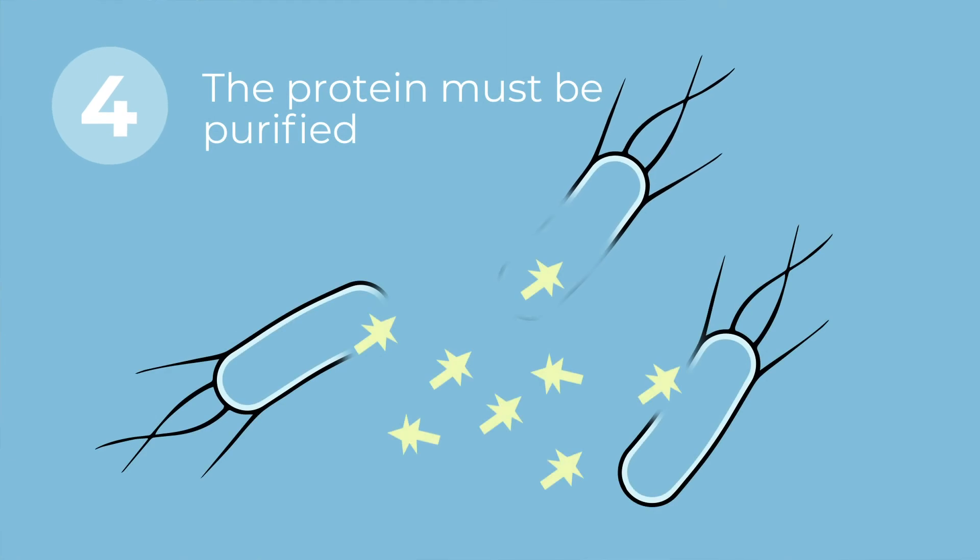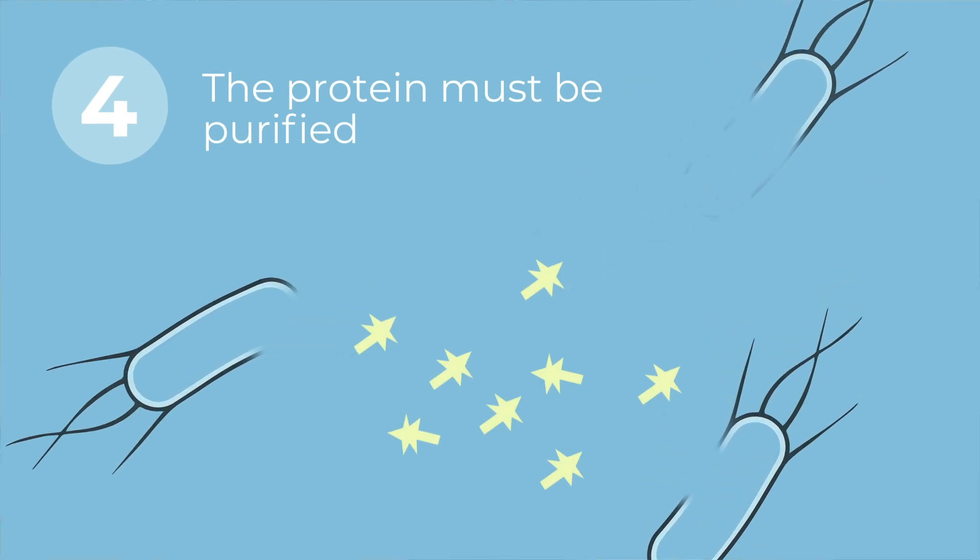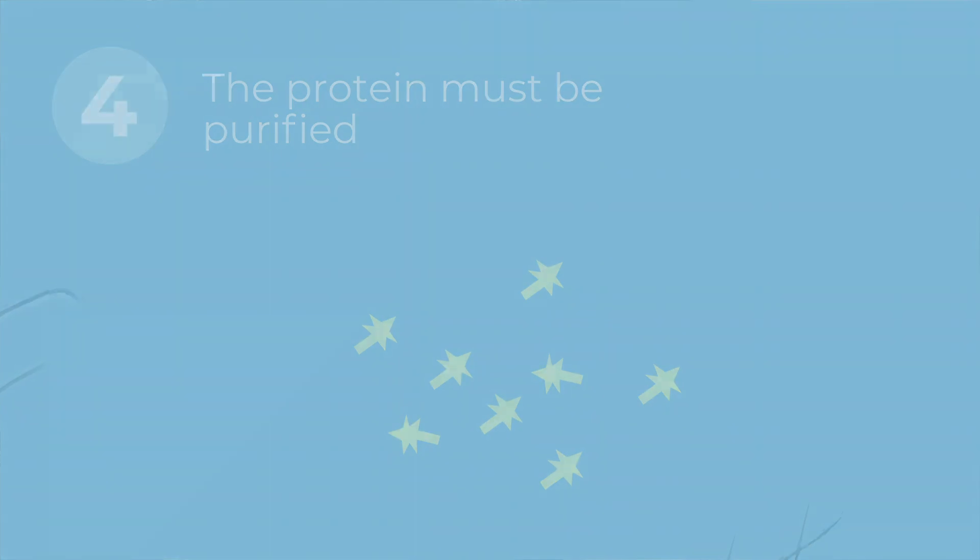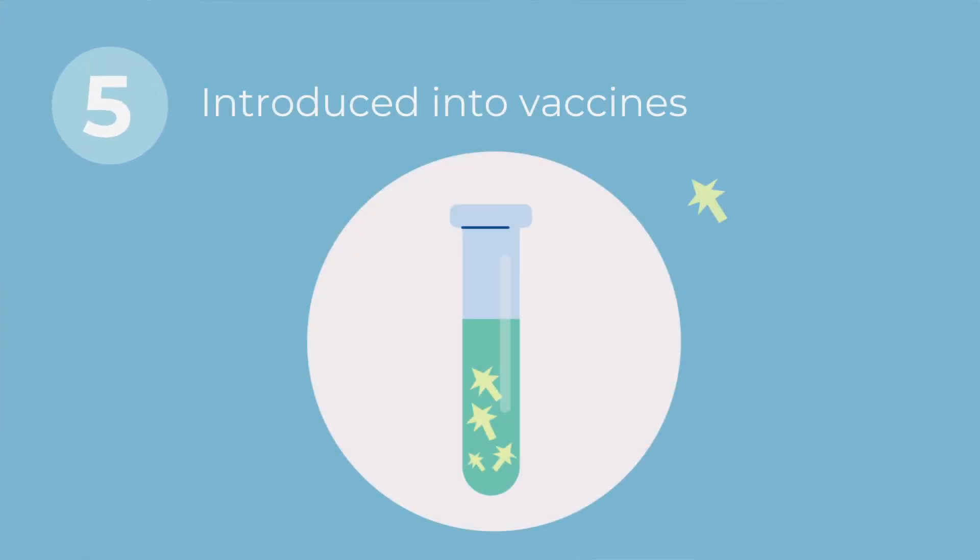The fourth step is that we have to purify this small part and finally introduce it to the vaccine. This will stimulate our immune system to produce the antibodies against the infection that we will prevent.